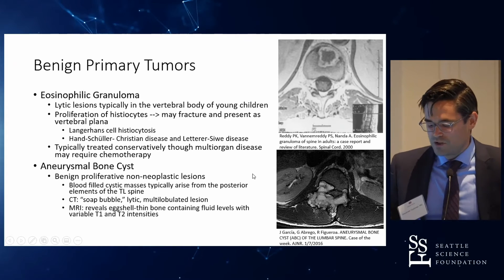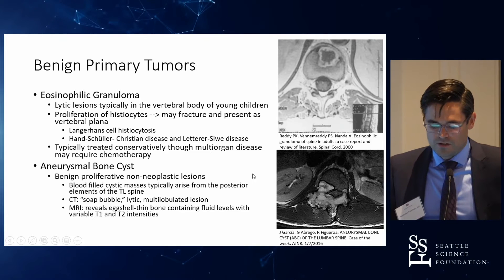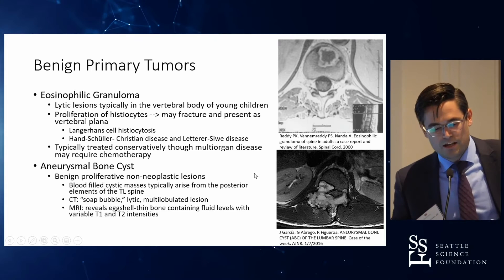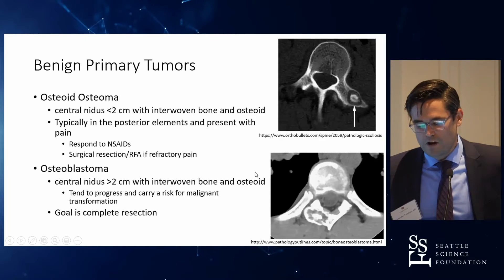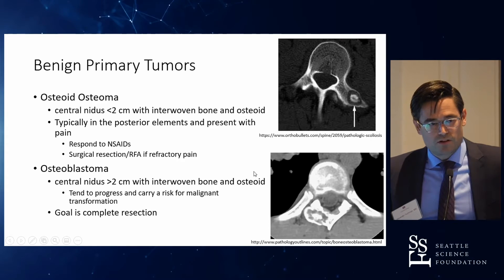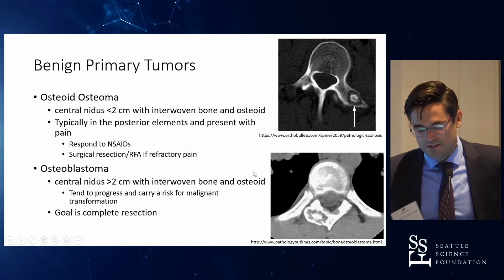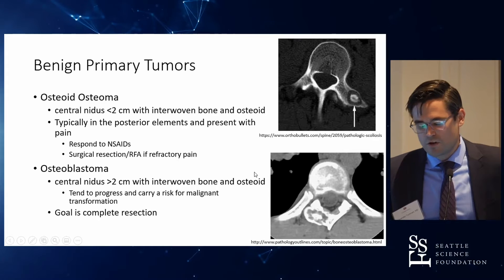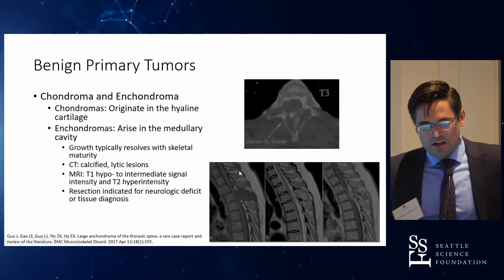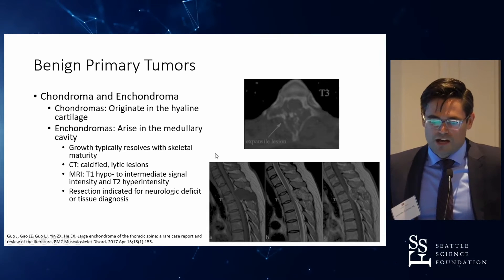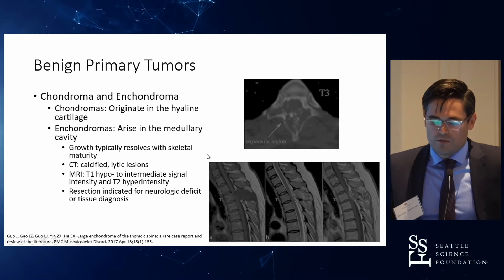Aneurysmal bone cysts show areas of hemorrhage within the lesion and tend to be very bloody, so if you have a suspicion and you're going to biopsy, you need to be aware of that. Then osteoid osteomas and osteoblastomas, which are distinguished based on size — osteoblastomas have a risk for progression and malignant transformation and are typically resected. Then chondromas and enchondromas, which are tumors that originate from the hyaline cartilage or the medullary cavity.